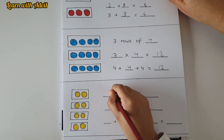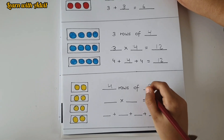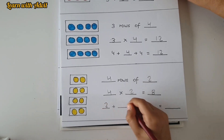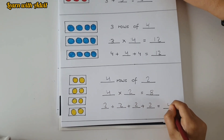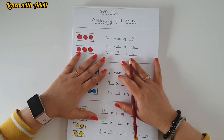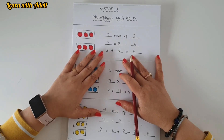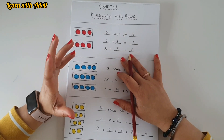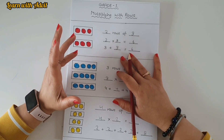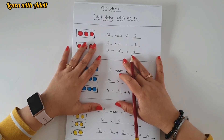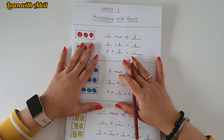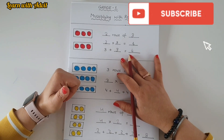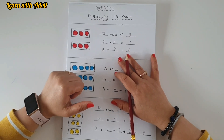Now do the last one: there are four rows of two objects. Write the multiplication equation: four times two equals eight. Write in repeated addition form: two plus two plus two plus two equals eight. Very good! You enjoyed this multiplication worksheet! These are really good methods to introduce multiplication to UKG and Grade 1 kids — table form, rows form, repeated addition, and addition form. Download the PDF worksheet from the link in the description below. Please like, share, and subscribe to our channel. See you in the next video — thanks for watching, bye!